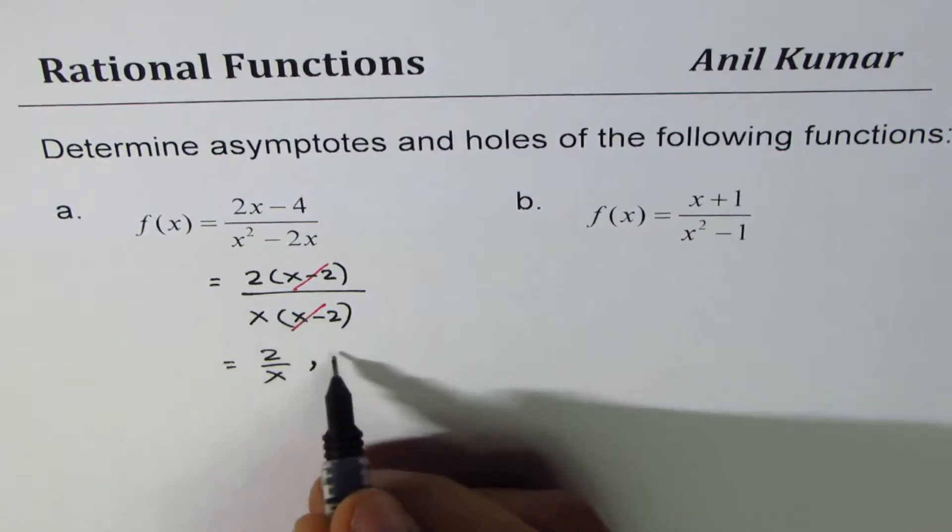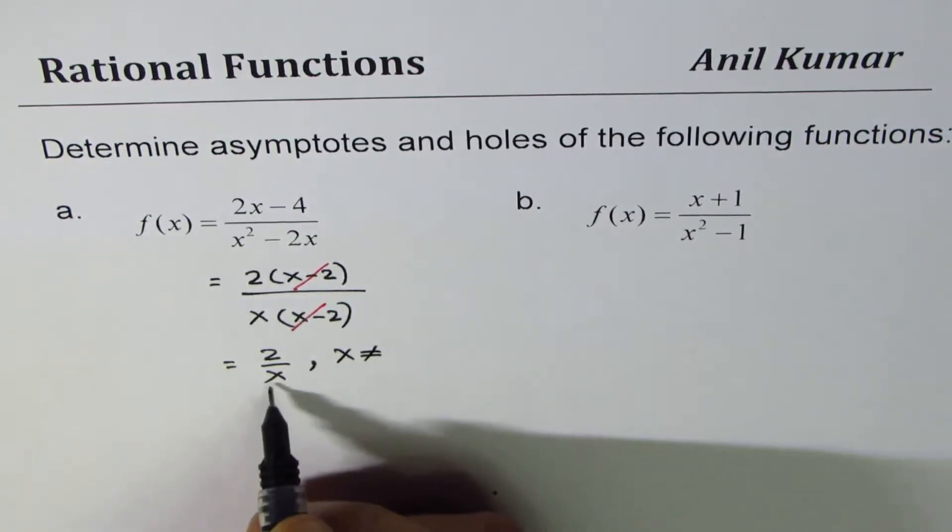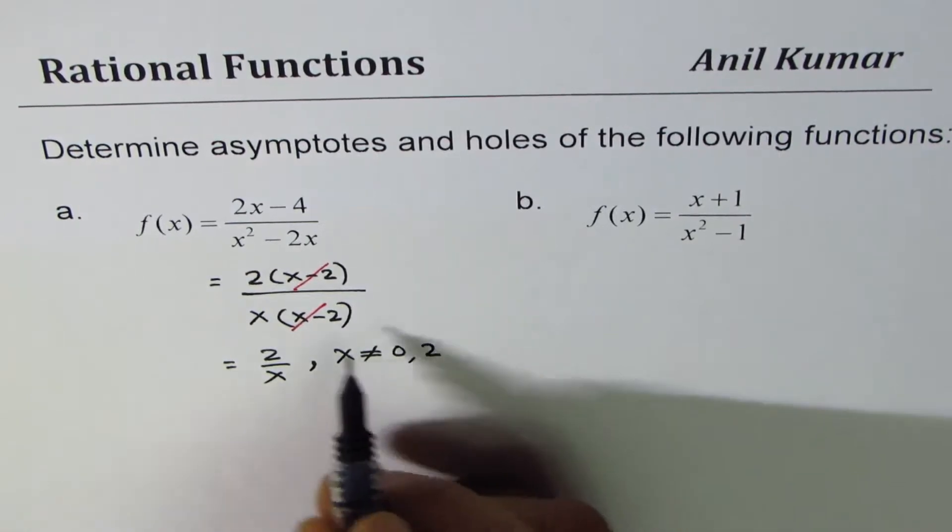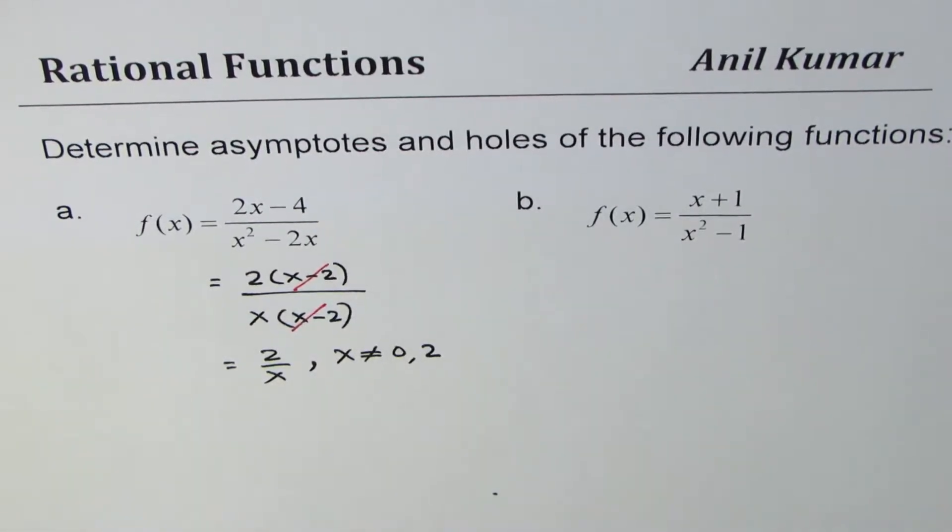It's a good time to write restrictions: x is not equal to 0, that will make this 0, and also 2. Don't forget the factor which has been cancelled.